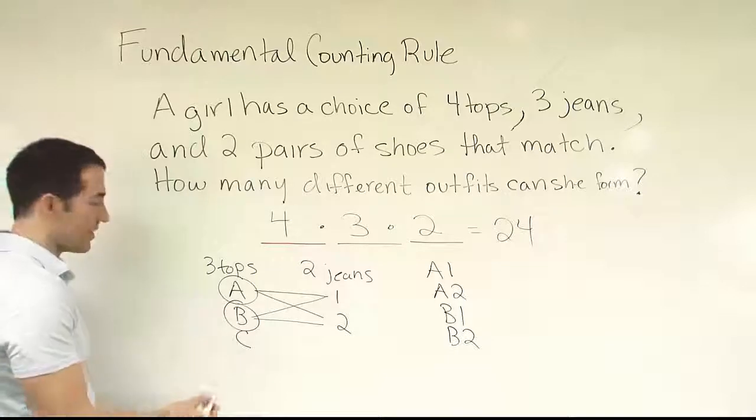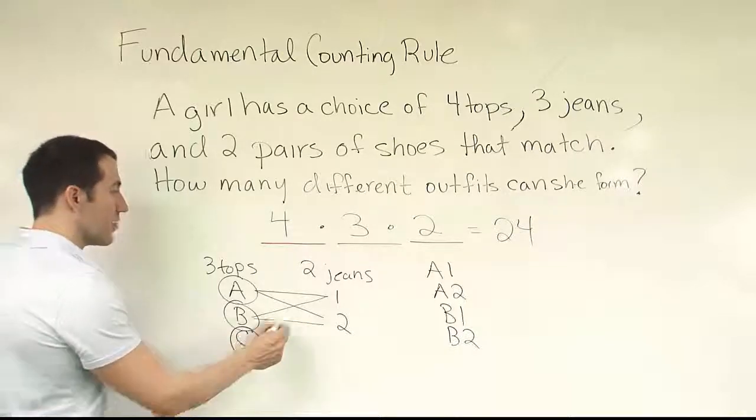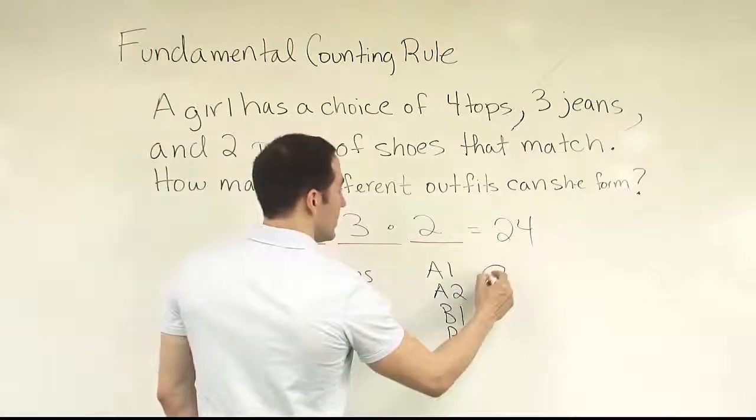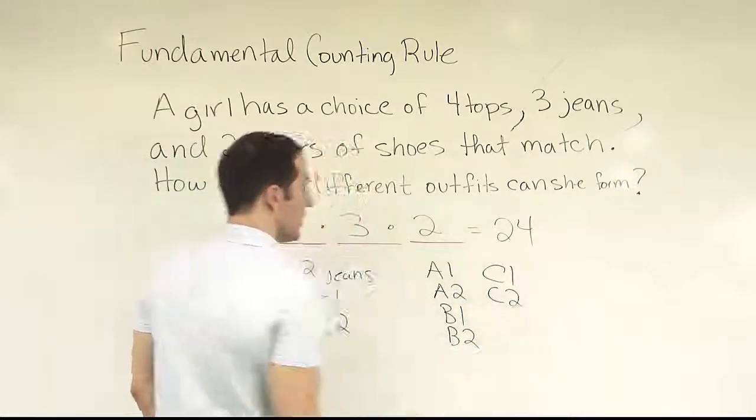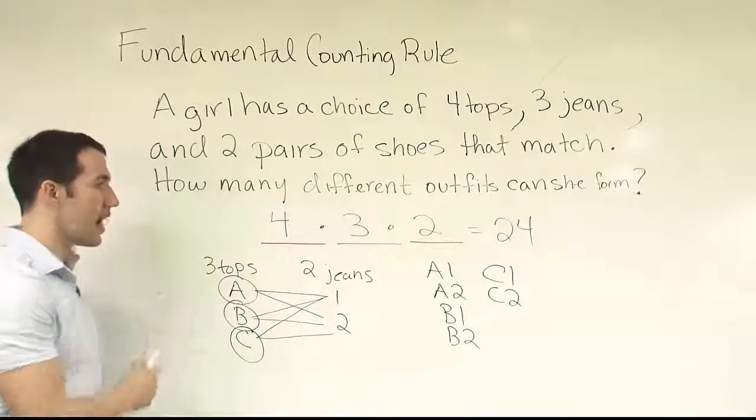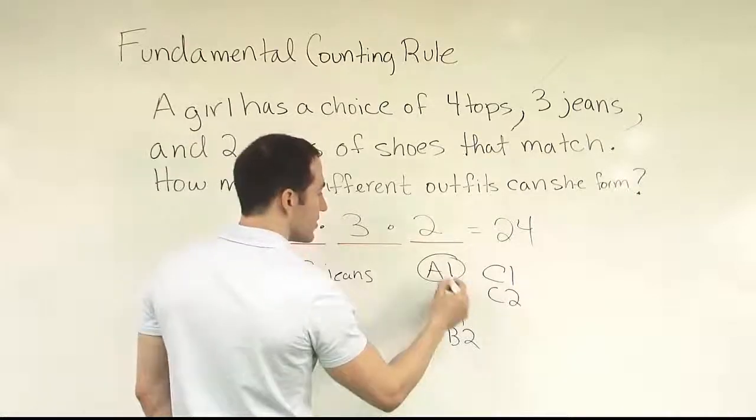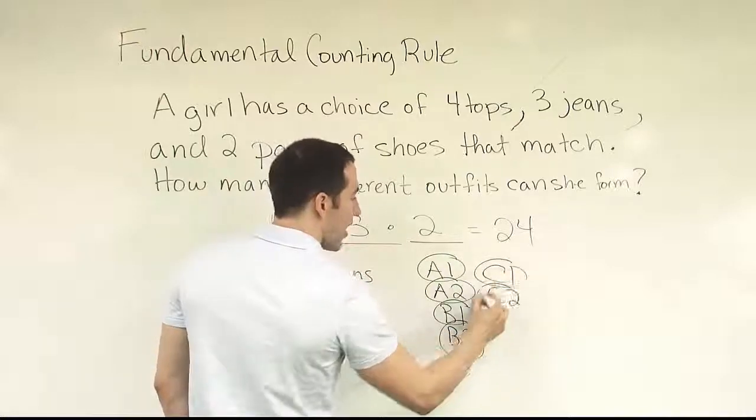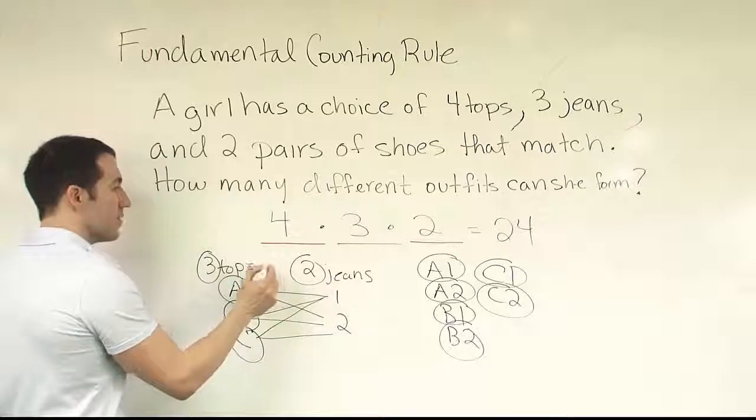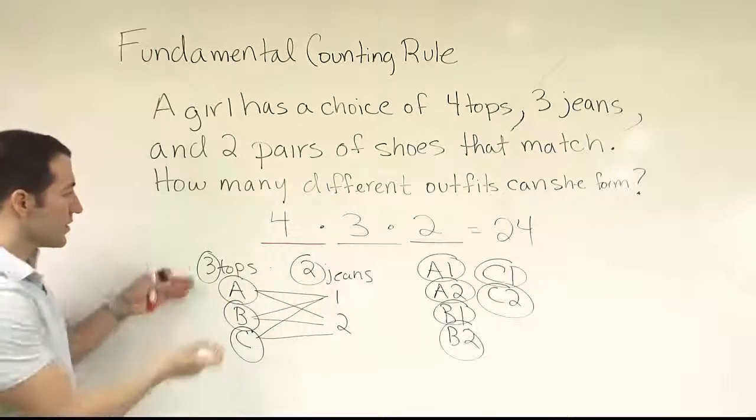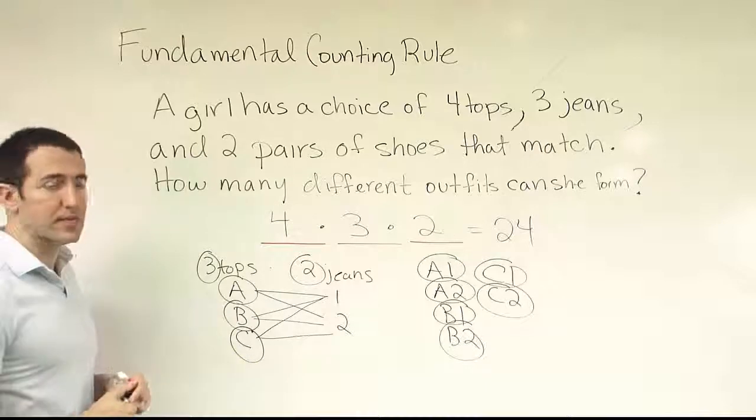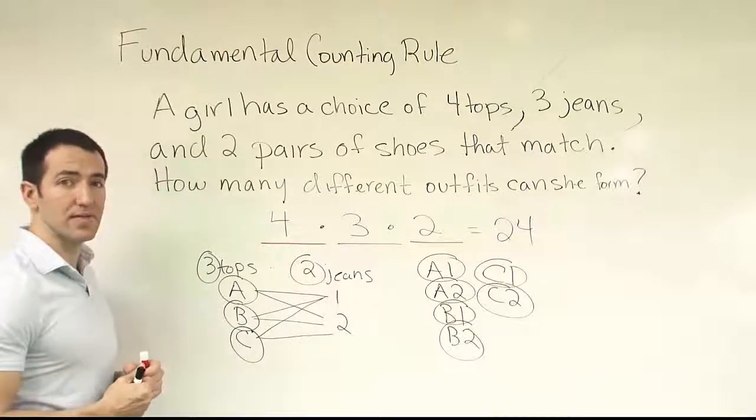And you can guess the same thing for C. If she had chose top C, she could also pair it up with jeans pair one or jeans pair two. That's going to give you C1, C2. So those are all the outfits she can form because we've exhausted all the possibilities for the tops. And you see that the number of outfits turns out to be exactly six outfits, which would have been the same as the product of three times two. So this is an illustration of why this works. It's not a proof of why this theorem is true, but it's just an example that might help you believe that it is true.